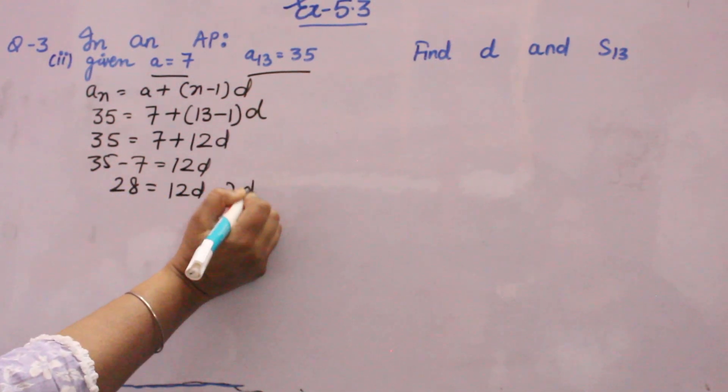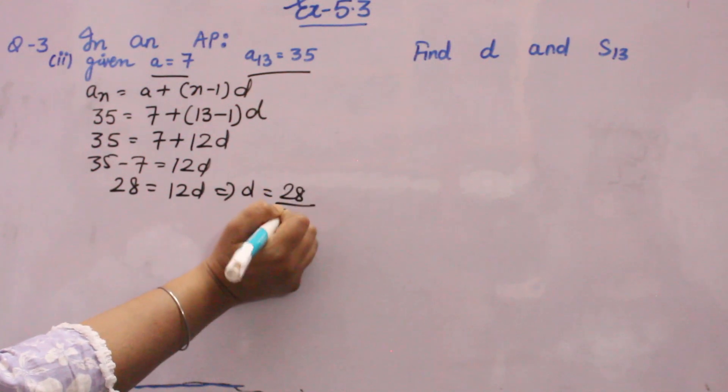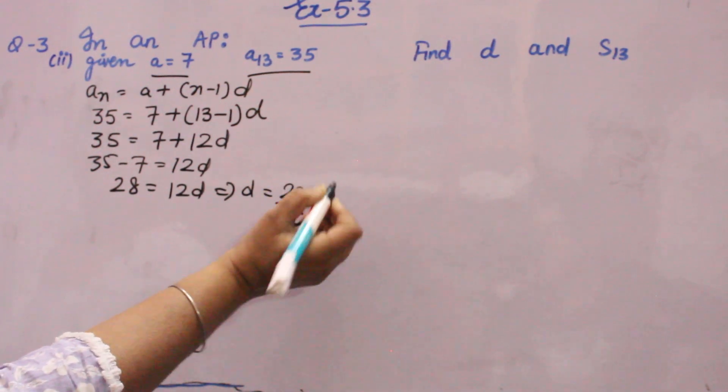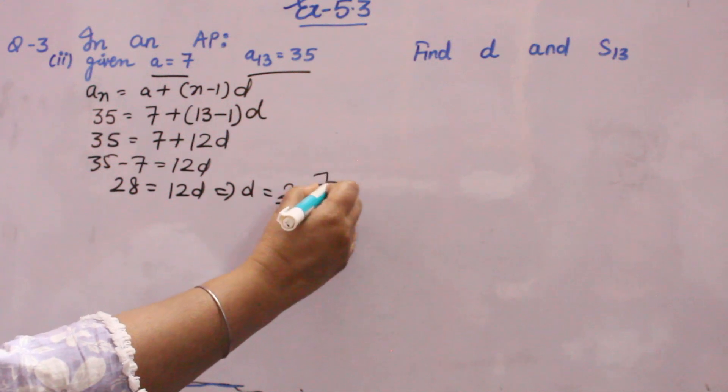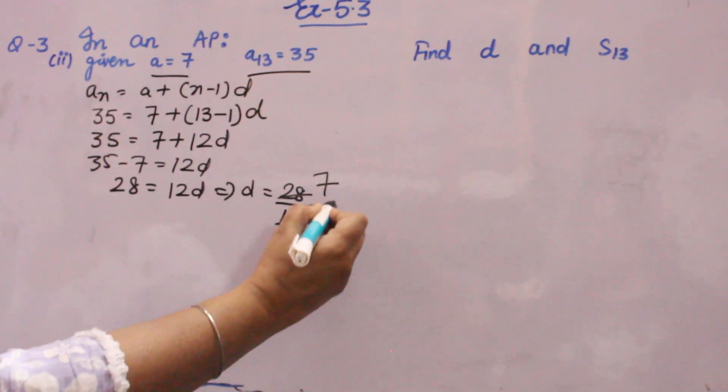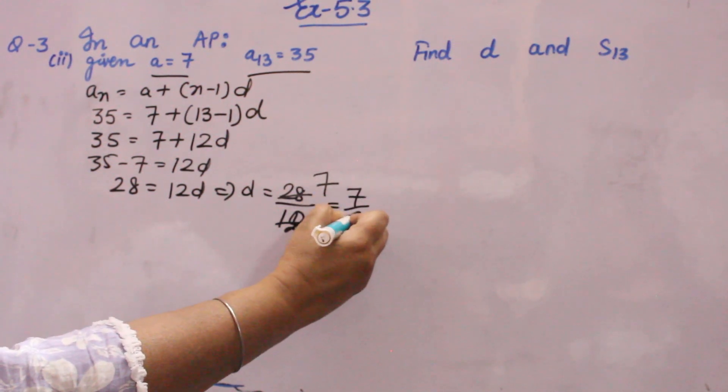So D will come 28 over 12, 28 over 12. Now you will solve it. 4 sevens are 28, 4 threes are 12. So D value will come 7 by 3.